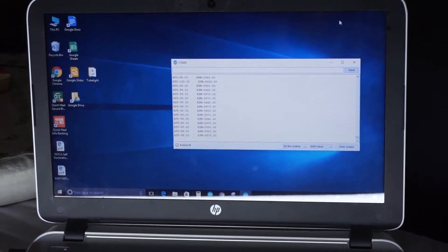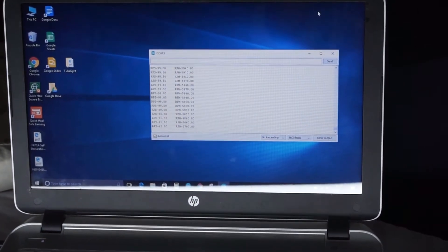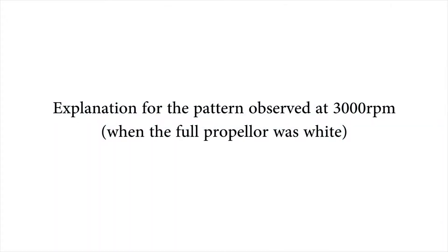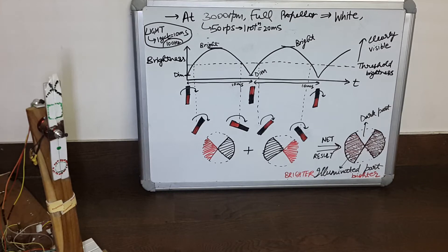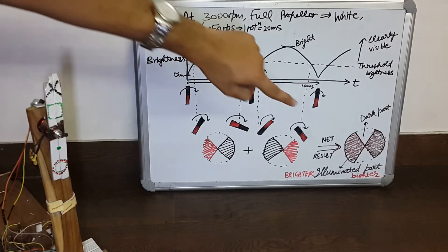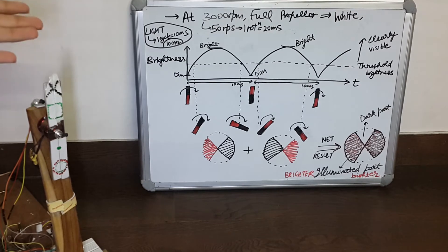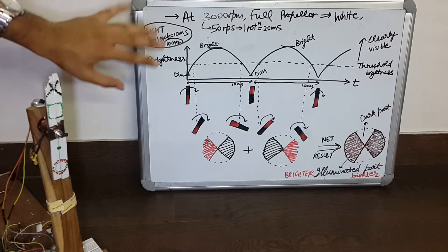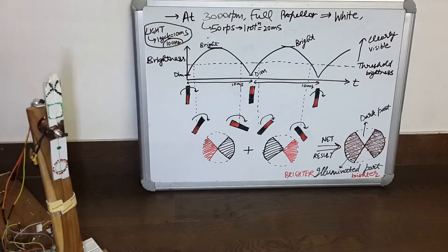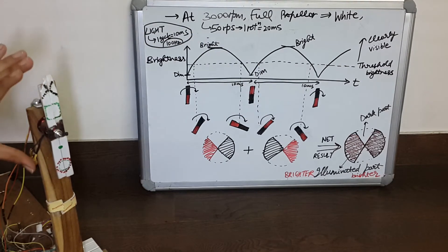If we have the propeller rotating at 3000 RPM, one rotation will be 20 milliseconds. And if the full propeller is covered with white reflective tape on both sides, we will see a pattern like this, and the illuminated part will be brighter than when only half the propeller was covered with white reflective tape.